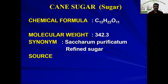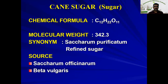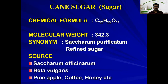The source of cane sugar is Saccharum officinarum, or sugar cane. Another source is Beta vulgaris, or any substance rich in sugar, such as pineapple, coffee, and honey. These are the sources of cane sugar.